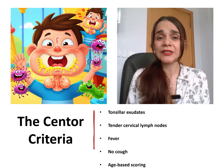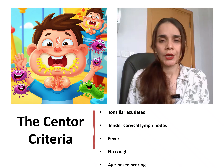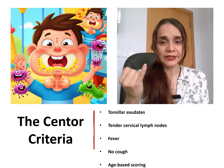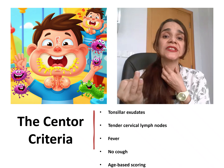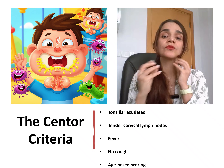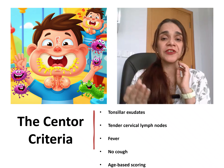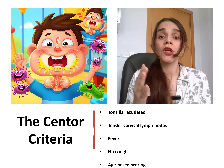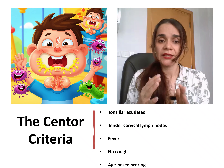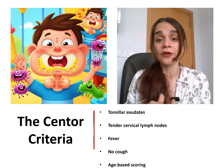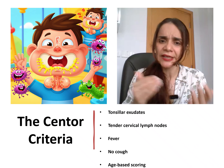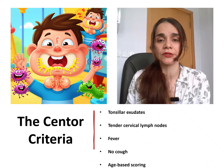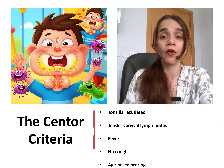The Centor criteria is a useful bedside tool. You get one point for each of the following: tonsillar exudate, tender anterior cervical lymph nodes, fever above 38°C, and absence of cough. Age is also factored in — younger patients score higher. A score of three or more increases the likelihood of strep. This helps decide whether to test or treat, and while it's not perfect, it helps reduce unnecessary testing and antibiotic overuse.